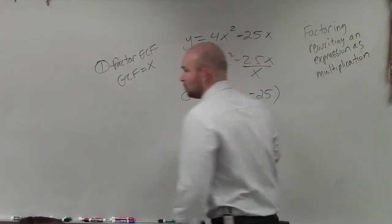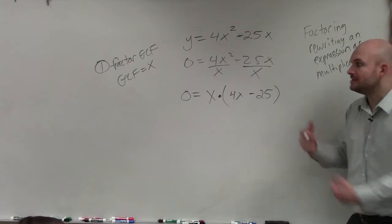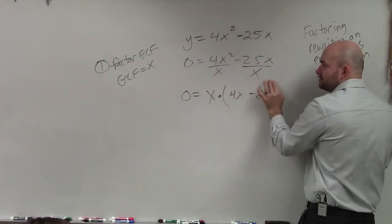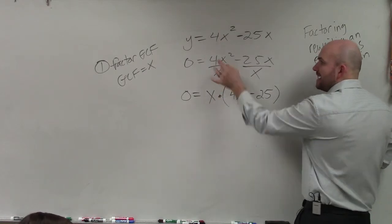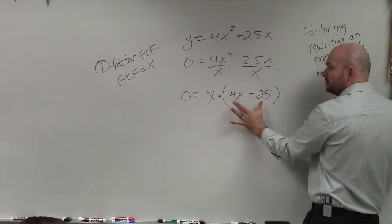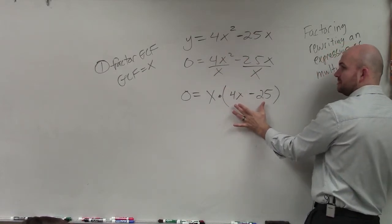Do you guys see how this is now a multiplication problem? OK? So whatever you divide out, it doesn't matter what this number is. Whatever you divide out, you're going to put outside the parentheses. Then whatever your quotient is, once you divided it, you're going to have inside that parentheses. Does that kind of make sense?